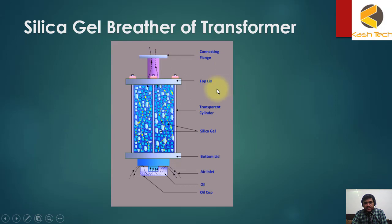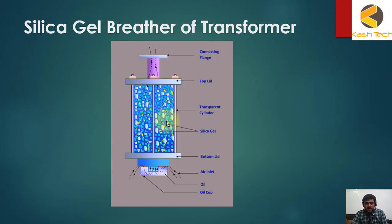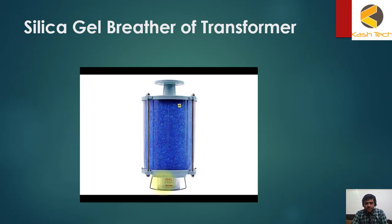This example shows the connecting flange, top lid, transparent cylinder, and silica gel which is in blue color, followed by the bottom lid, air inlet, oil, and oil cap. When the silica gel absorbs moisture, its color changes from blue to pink. When you observe that color change, you have to replace or reactivate the silica gel.